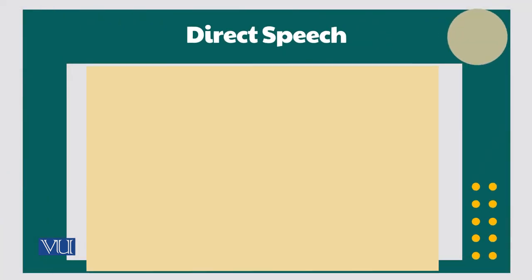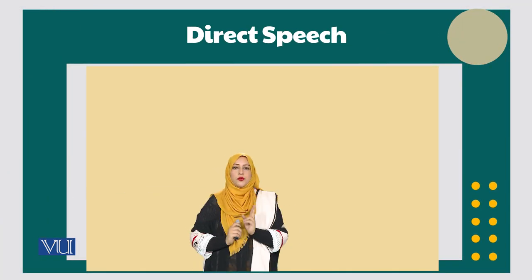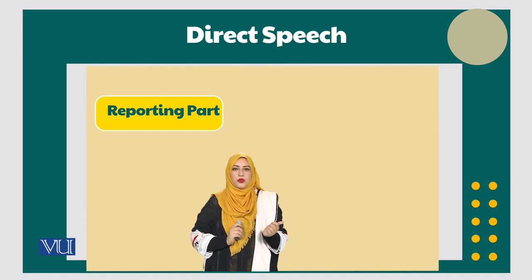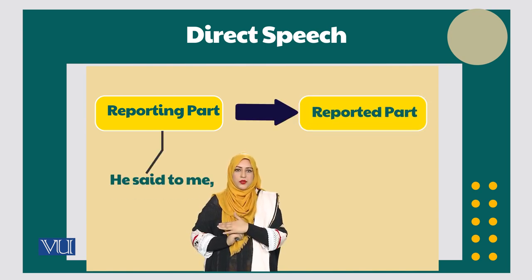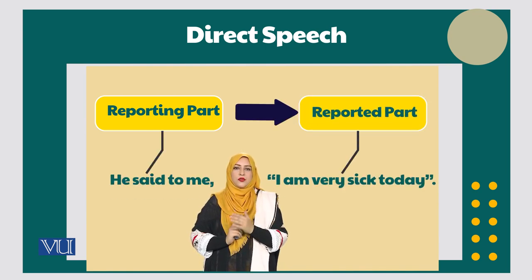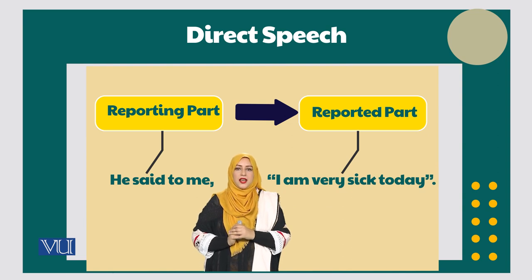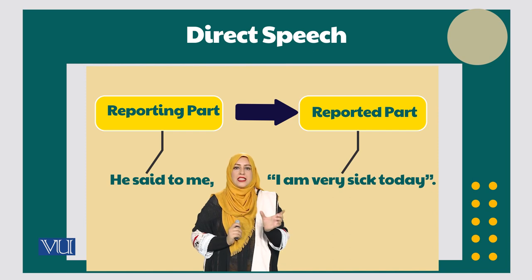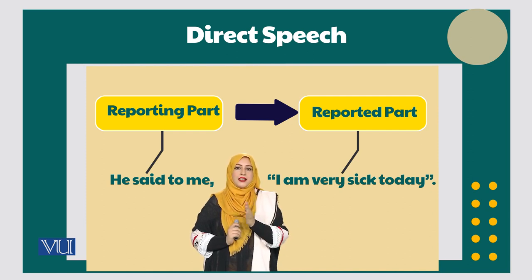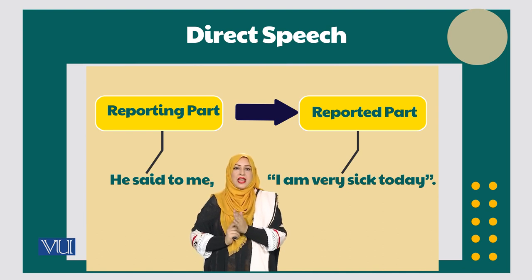Direct speech usually comprises two parts. The first one is reporting speech and the other one is reported speech. For example, in the sentence 'He said to me, I am very sick today' — the first part, 'he said to me,' is the reporting part, and the later half, 'I am very sick today,' is known as the reported part.